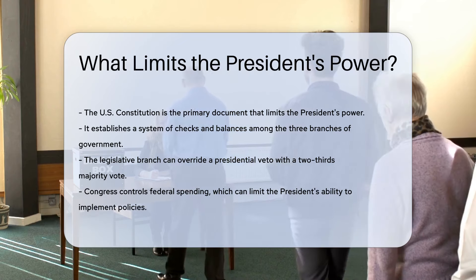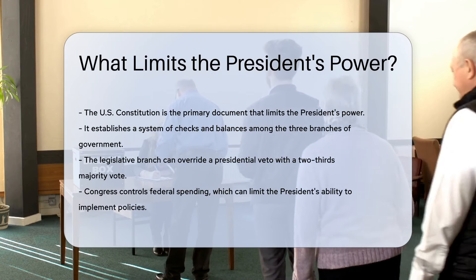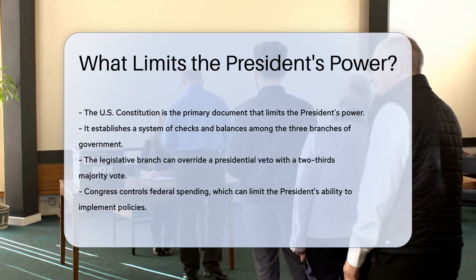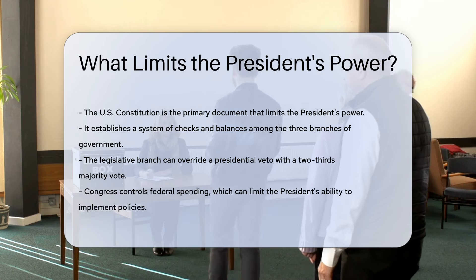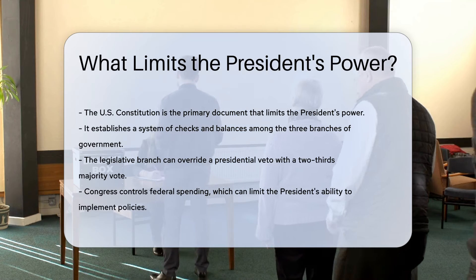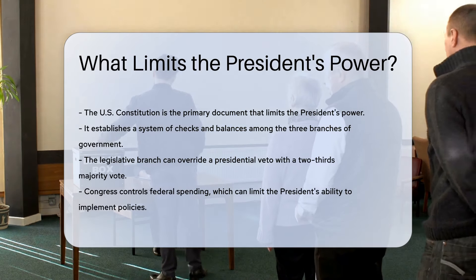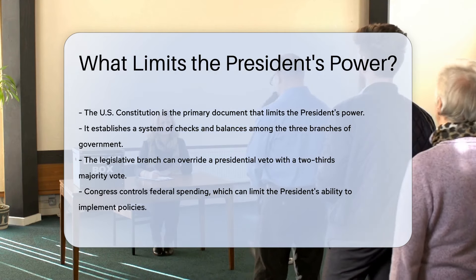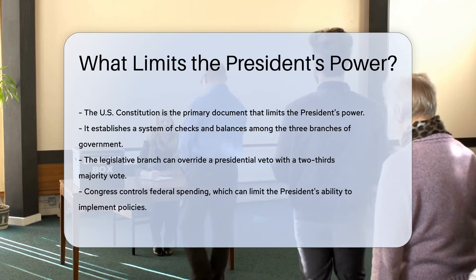It establishes a system of checks and balances among the three branches of government. The legislative branch, composed of the House of Representatives and the Senate, can override a presidential veto with a two-thirds majority vote. Congress also controls federal spending, which can limit the President's ability to implement policies.